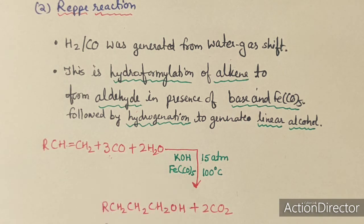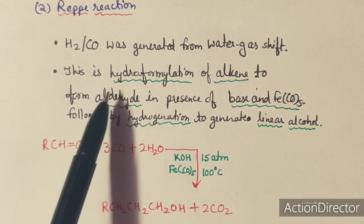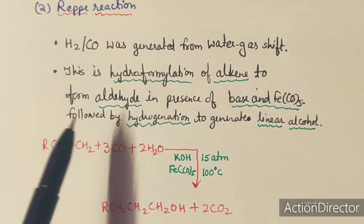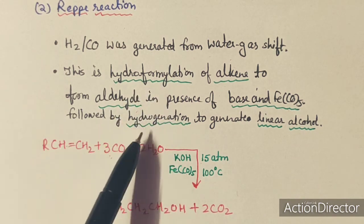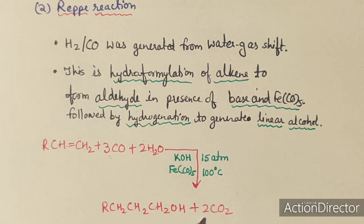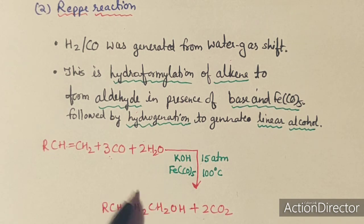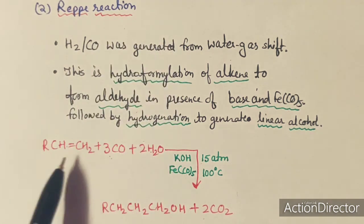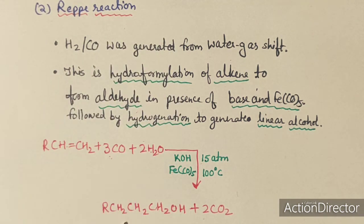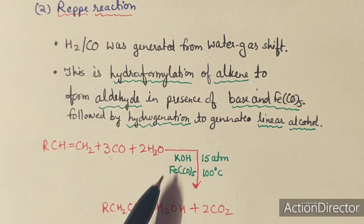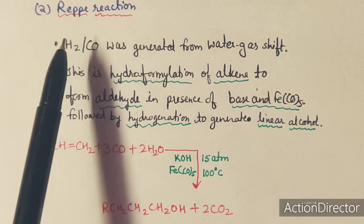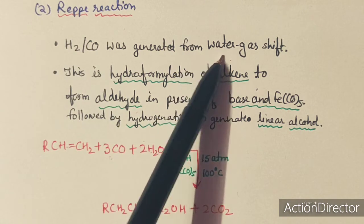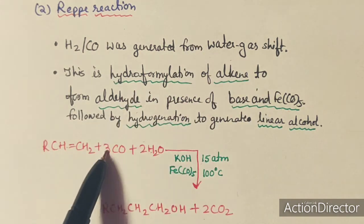In this reaction, an olefin reacts with CO and H2O in the presence of base and Fe(CO)5 at 115 atm and 100°C to produce an aldehyde, which is then hydrogenated to form linear alcohols as the final product. The H2 and CO used in this reaction come from the water gas shift.